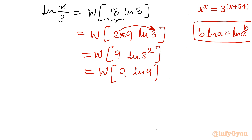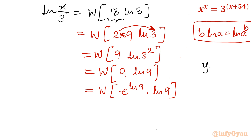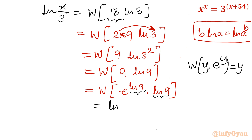Now 9 can be written in exponential form as e^(ln9). So 9·ln9 = e^(ln9) · ln9, which matches the standard Lambert W format y · e^y, where y = ln9. Applying W gives y = ln9.